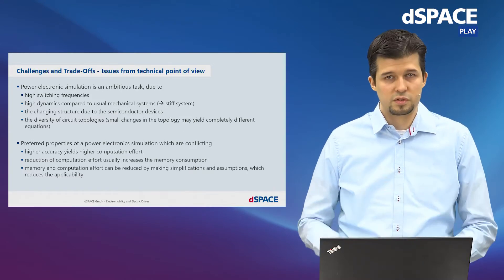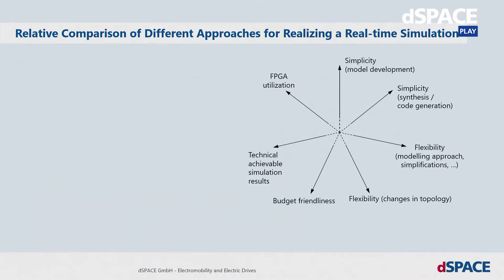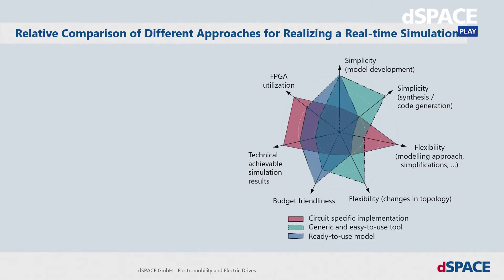When we use this and put it in a radar chart, we can make a relative comparison of the available solutions. Here we have our three solutions. What does relative comparison mean? As an example, we use budget-friendliness — the ready-to-use model is more budget-friendly than the circuit-specific implementation.